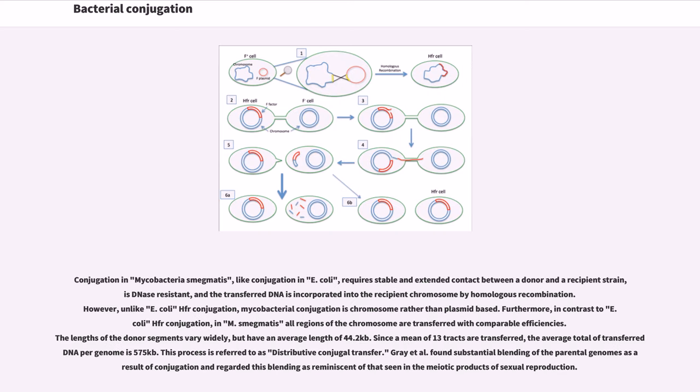Conjugation in Mycobacterium smegmatis, like conjugation in E. coli, requires stable and extended contact between a donor and a recipient strain, is DNase resistant, and the transferred DNA is incorporated into the recipient chromosome by homologous recombination.